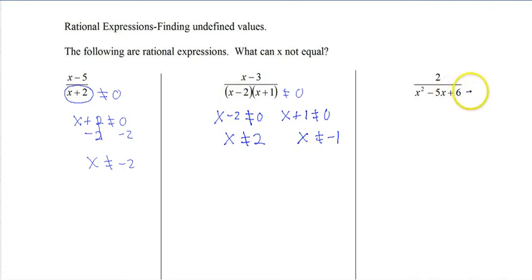All right, so let's try one more. So if we set this one equal to 0, then this gives us a quadratic. And all we're going to do is factor it first. So we get x minus 2 and x minus 3. And that allows us to set each one not equal to 0.